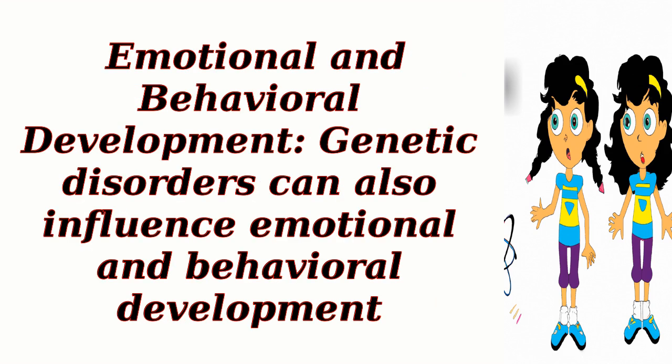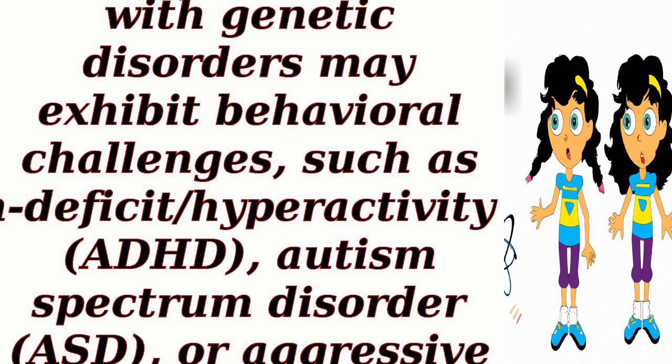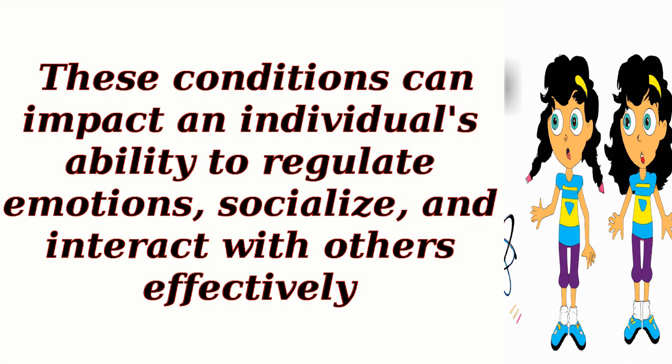Emotional and behavioral development: Genetic disorders can also influence emotional and behavioral development. Some individuals with genetic disorders may exhibit behavioral challenges, such as attention deficit hyperactivity disorder (ADHD), autism spectrum disorder (ASD), or aggressive tendencies. These conditions can impact an individual's ability to regulate emotions, socialize, and interact with others effectively.